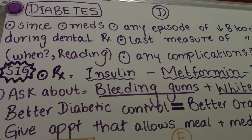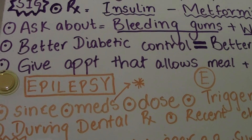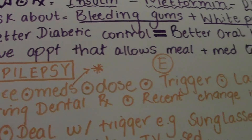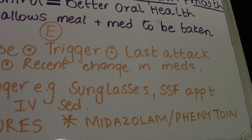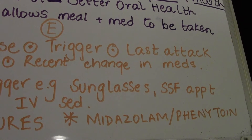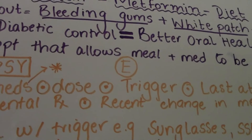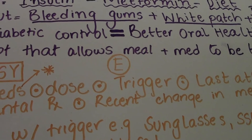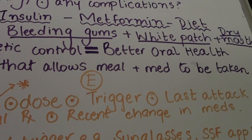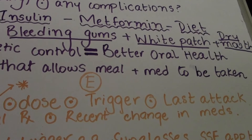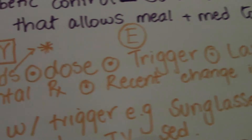Moving to epilepsy — ask since when they've been diagnosed with epilepsy and what medications they take. Medications may include midazolam or phenytoin. Phenytoin is linked with gingival enlargement, so ask if they've noticed any puffiness or swelling of the gums since starting phenytoin. Ask what dose they're taking and whether there's been any recent change in the dose, as a recent change means they're more at risk of developing a seizure during treatment.